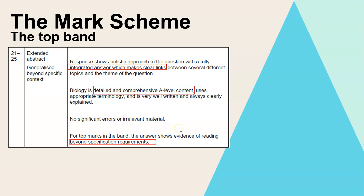You can't have any significant errors or anything that isn't relevant to the title. And if you've achieved all of that — and only if — then you might get 24 or 25 marks if you have a whole chunk, so about a paragraph of beyond the specification information. It can't just be the odd extra example of an enzyme or a disease that's beyond the spec; you do have to write quite a substantial amount to gain those marks.